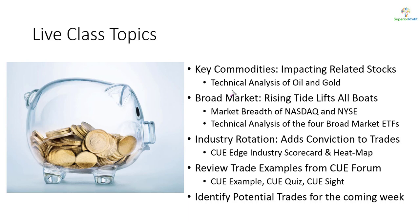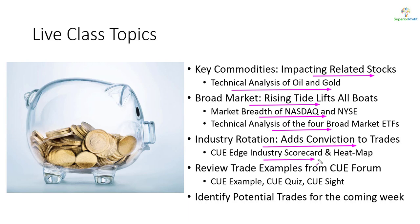As usual, we will look at oil and gold using technical charts, as they tend to impact related stocks. When swing trading stocks, we like to take trades in the direction of the market. We will study market direction using Nasdaq and NYSE market breadth and technical analysis of market ETFs. We also align trades with industry strength, studied using scorecard and heat map. Along the way, we may review some recent trade ideas shared in our traders forum, which is open to the public, and we look for potential trades for the coming week.